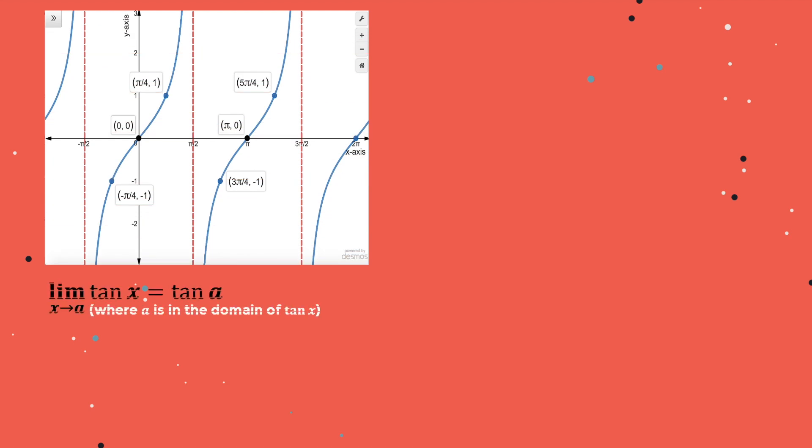Now, let's have the limit of tangent and cotangent. The limit of tangent x as x approaches a is equal to tangent a, where a is in the domain of tangent x. For example, the limit of tangent x as x approaches 3 is equal to tangent 3.